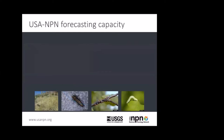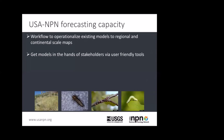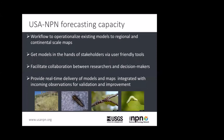To quickly summarize where NPN stands in this field of forecasting: generally, we're not creating a lot of models ourselves, but what we're doing is operationalizing existing models to create regional and continental scale maps. Working with us is an opportunity to take your models and create broader scale products, as well as getting models in the hands of stakeholders via user-friendly tools like our visualization tool and notification services. We're in a position to facilitate collaboration between researchers and decision makers — we're a boundary organization with connections across many different realms. We also have the added capacity of providing real-time delivery of models and maps integrated with incoming observations that can be used for validation and improvement.